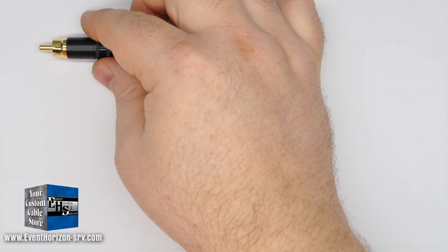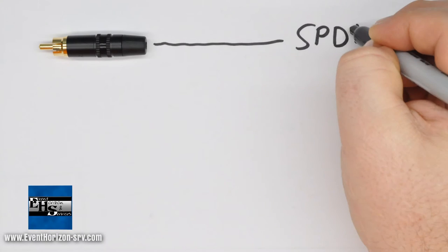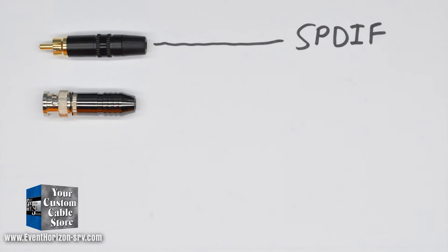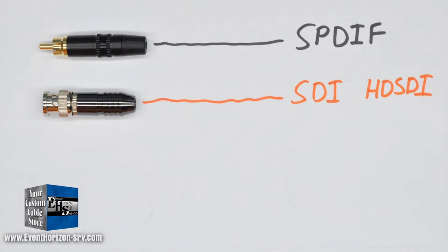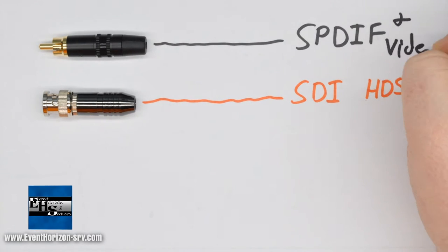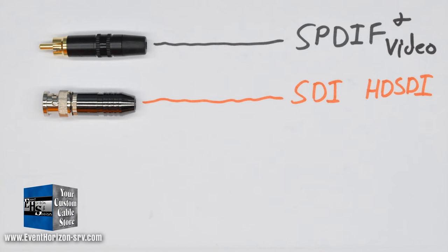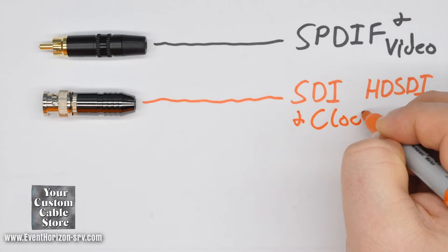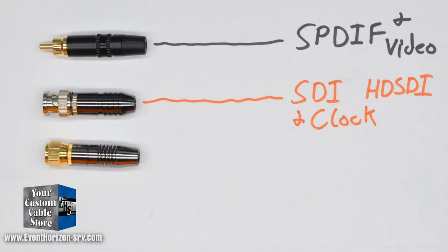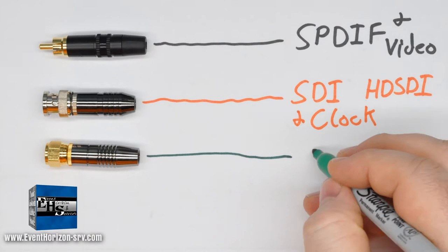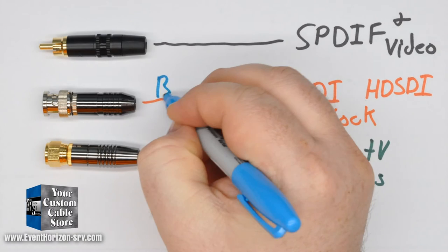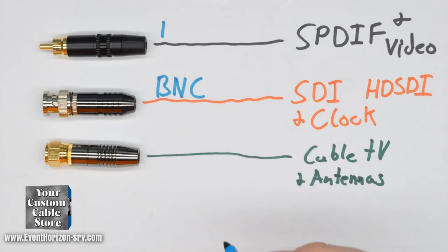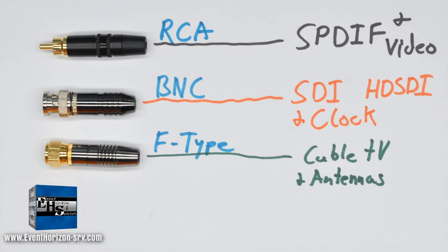Common applications include SPDIF, which is digital audio, SDI and HD SDI, which is digital video, composite video, component video, clock for audio converter syncing, cable TV, antennas, and more. These cables are commonly terminated with BNC connectors, F-type connectors, and RCA connectors.